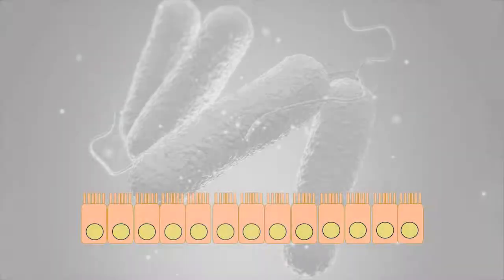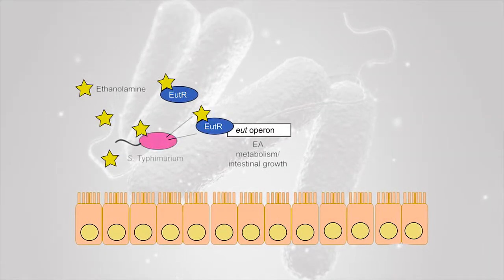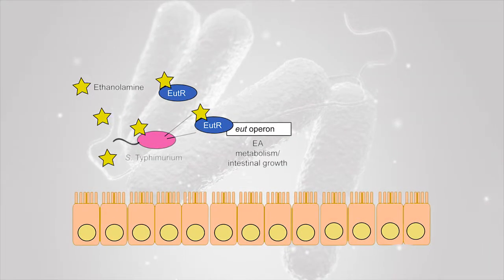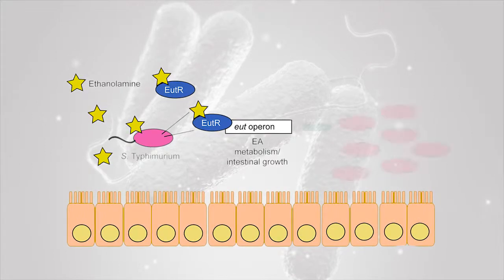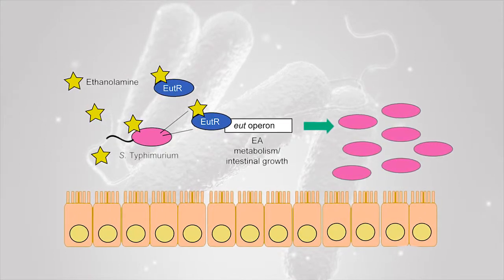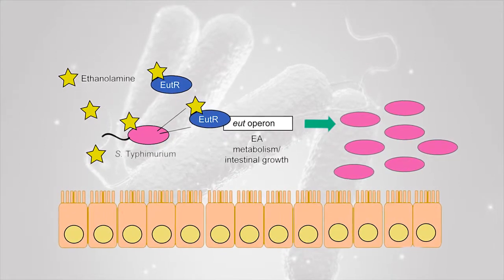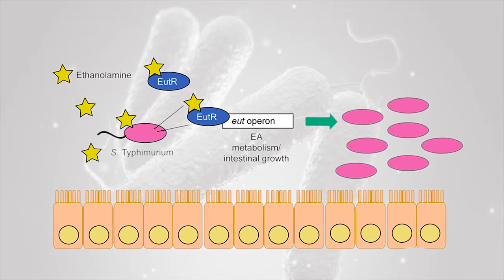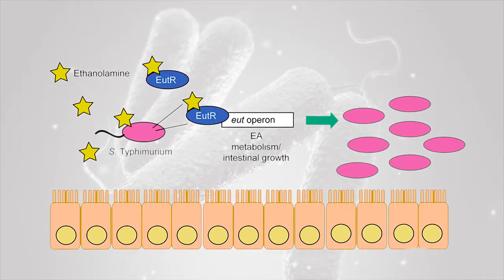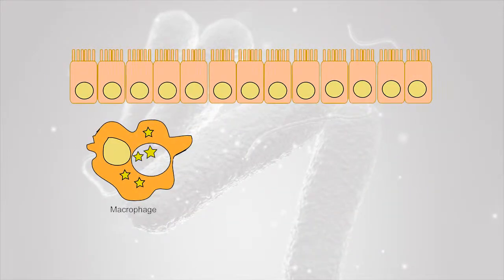Ethanolamine is a significant component of cell membranes, and so just the turnover of cells in our intestine constantly replenishes ethanolamine as a source. During different phases of Salmonella infection there are different challenges it has to overcome. In the intestine, Salmonella has to outgrow the microbiota present in our gut in order to establish infection, and there ethanolamine is an essential metabolite for Salmonella to grow.